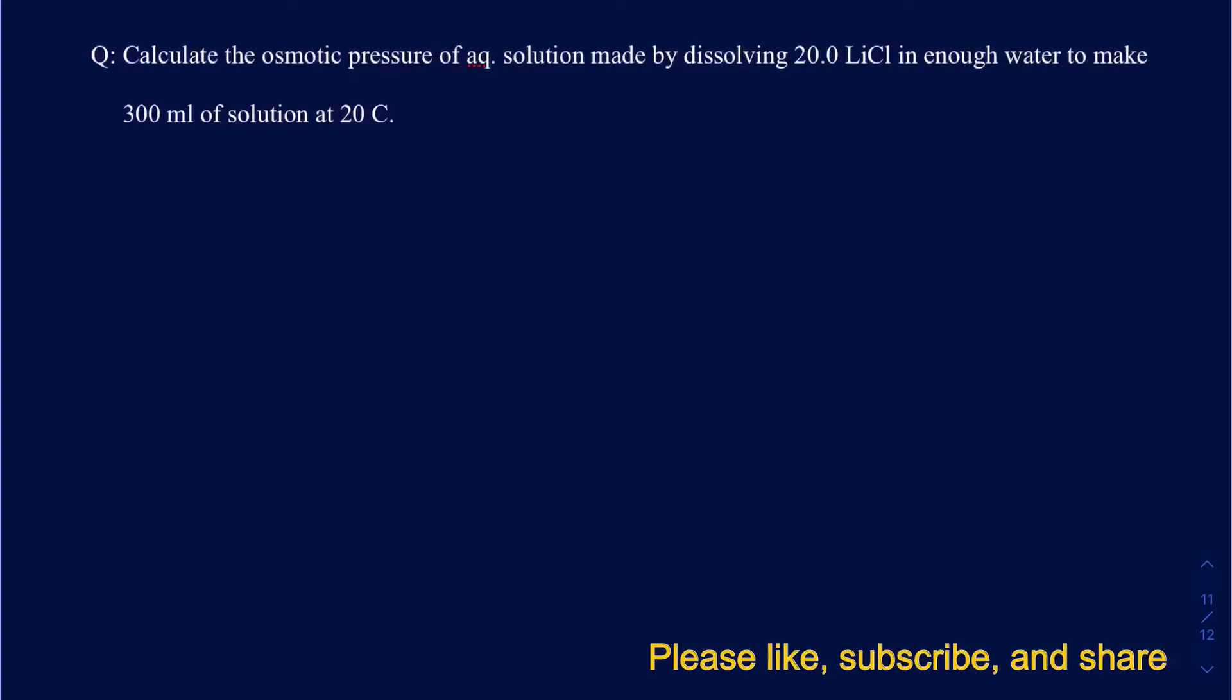So the question reads: calculate the osmotic pressure of an aqueous solution made by dissolving 20 grams of LiCl in enough water to make 300 milliliters of solution at 20 degrees Celsius.